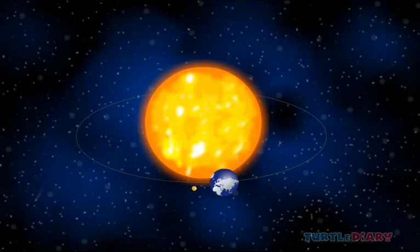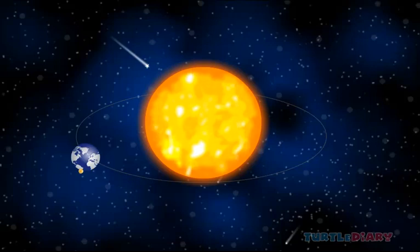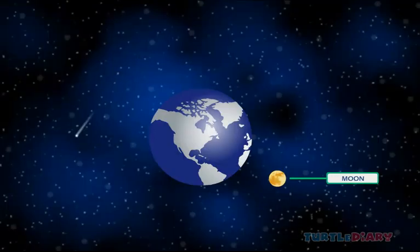It takes 365 days to revolve around the sun. Earth looks blue from space because it is mainly covered by water. Earth has one moon.